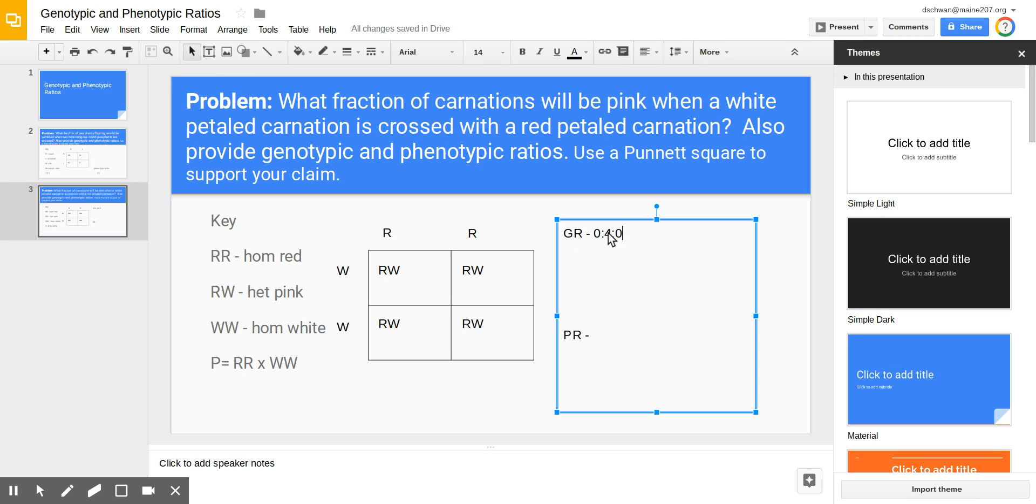Now my ratio here also matches the order that I have the genotypes in my key. I have RR first that's one of our zeros. I have RW listed second. There's my heterozygous situation and then my WW is listed third. There's the zero to represent that there are no offspring that have the WW genotype.